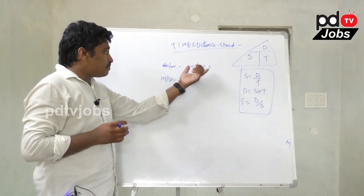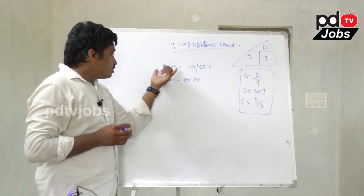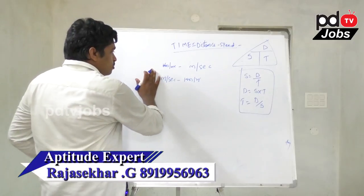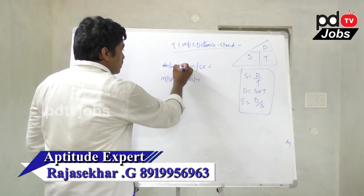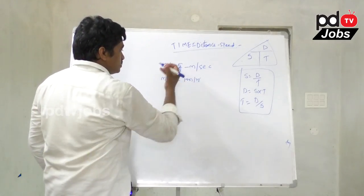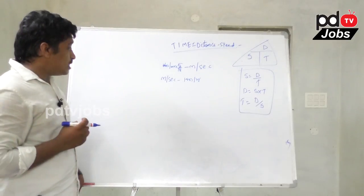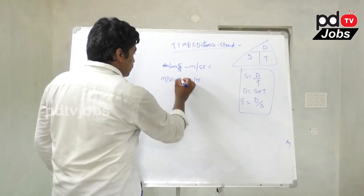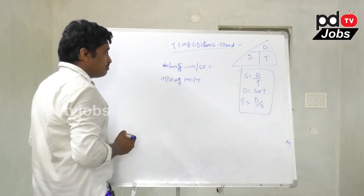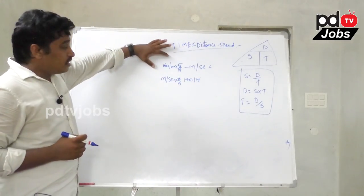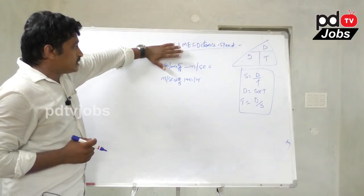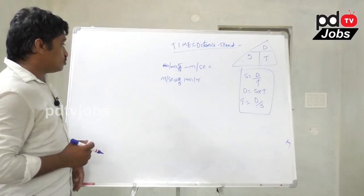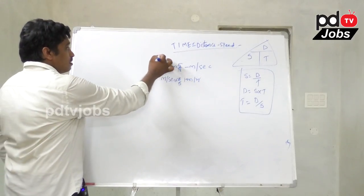To convert km per hour to m per second, multiply by 5 by 18. To convert m per second to km per hour, multiply by 18 by 5. So, km per hour to m per second conversion: multiply by 5 by 18.